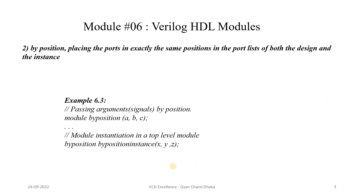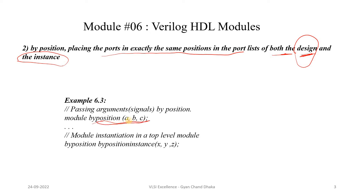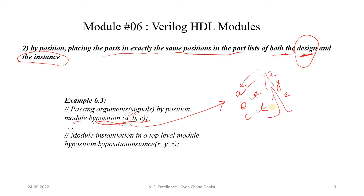The second way is by position — placing the ports in exactly the same position in the port list of both the design and the instance. Whatever order is defined in the module design, we must use that same order when instantiating. For example, module 'by_position' has three ports A, B, and C. Since A is first, B is second, and C is third, we connect X, Y, and G in that order — X connects to A, Y to B, and G to C.